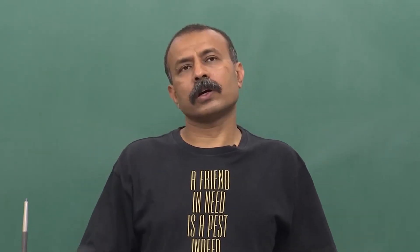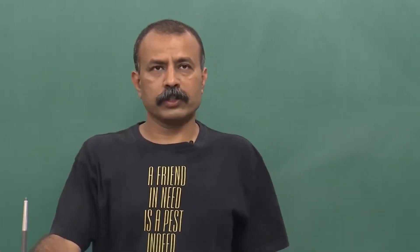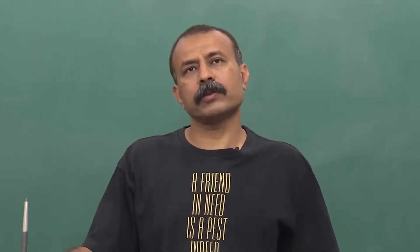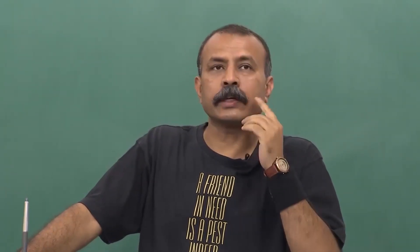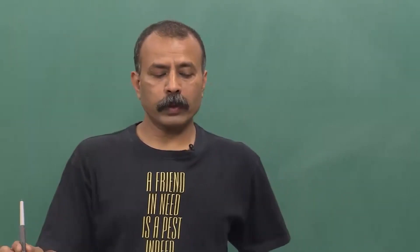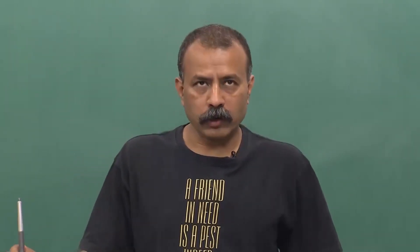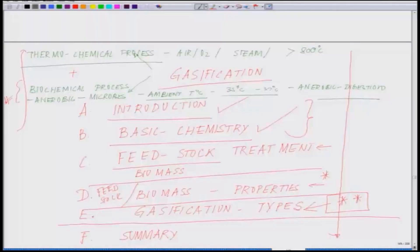We were supposed to talk about the pre-treatment of the feedstock or biomass to be used, followed by the properties of the biomass. The final phase will be the design of the gasifier — what are the different gasifier designs, their advantages and disadvantages, and what is the output and efficiency. We have talked about the introduction and basic chemistry. Today, we will be starting with feedstock treatment followed by feedstock properties.